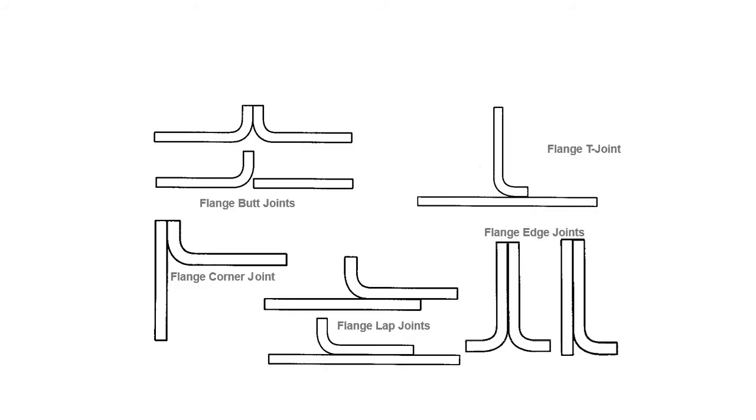Here are some basic joint type extensions - flanged joints. You've got flanged butt joints, flanged corner joints, flanged lap joints, flanged edge joints, and flanged T joints. Lots of flanged joints.